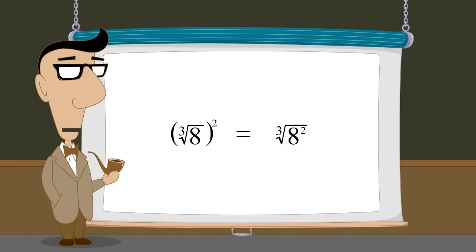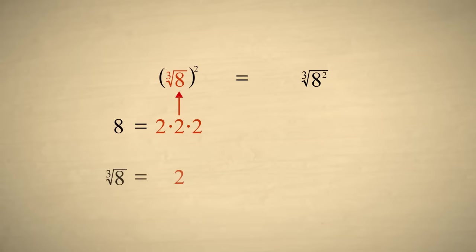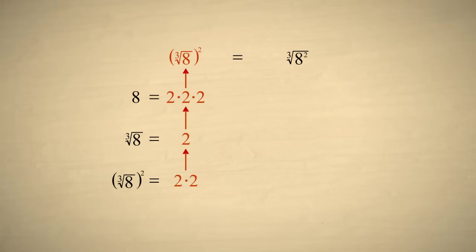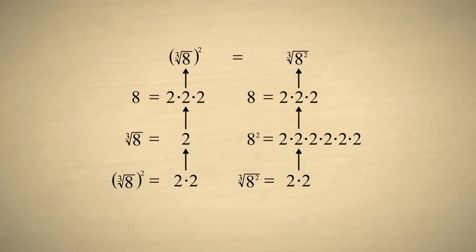If this still seems a bit like magic, let's look at it another way. Let's start by writing the number eight as two times two times two. When we take the cube root, this leaves us with one two. Then squaring this gives us two twos. On the right side, we again start by writing eight as two times two times two. We then square this quantity, giving us six twos. Then, taking the cube root, leaves us with two twos. So in both cases, we end up with two twos multiplied together, which equals four.